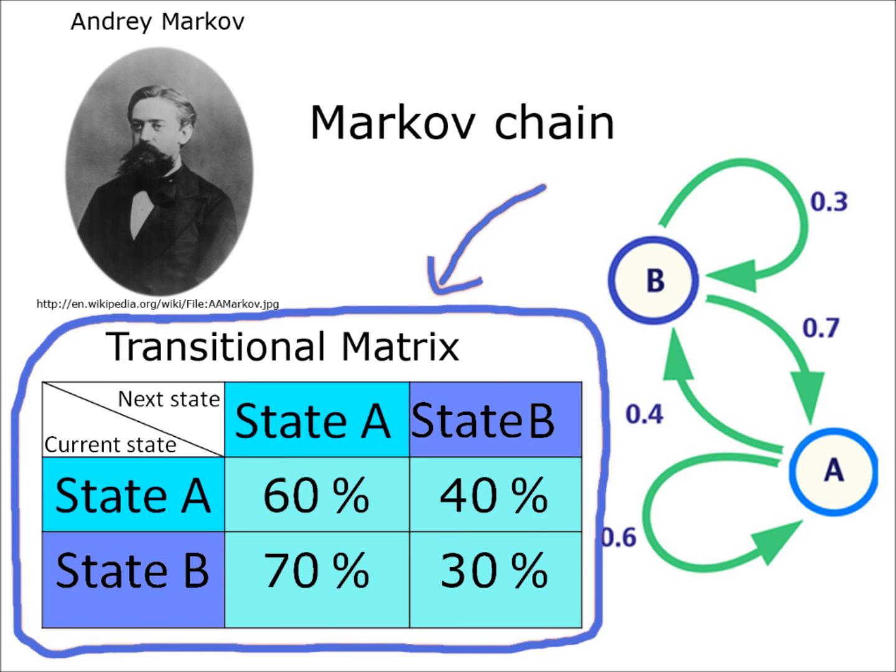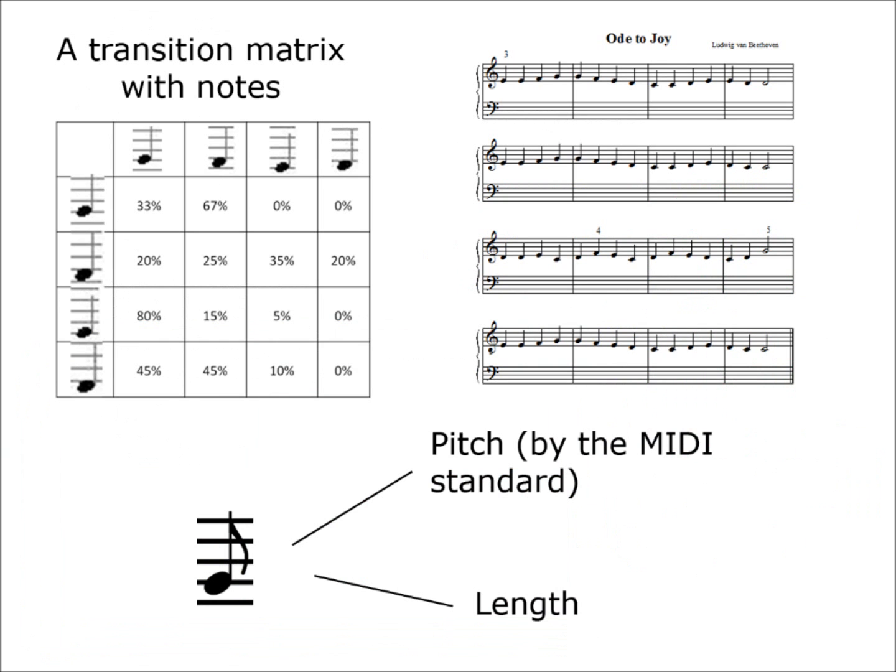When generating the next state, it is randomly chosen using a set of probabilities stored in a transitional matrix. For the sake of my research into music, a state is the combined value of pitch and length for the current note of a melody.